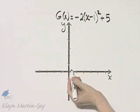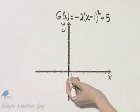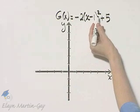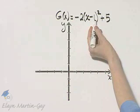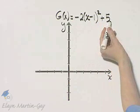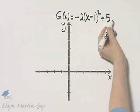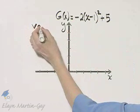We will take the original graph of x squared, whose vertex is at 0, 0, and we move 1 to the right and 5 up. And if we do so, our new vertex is where?